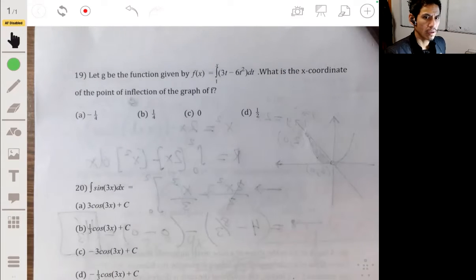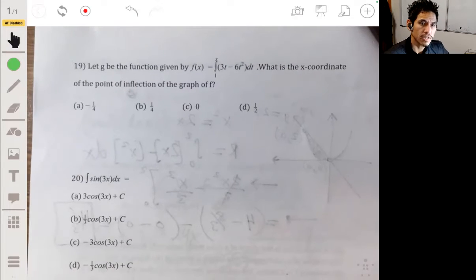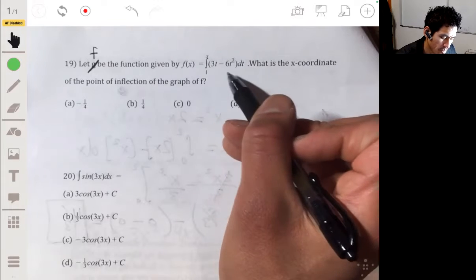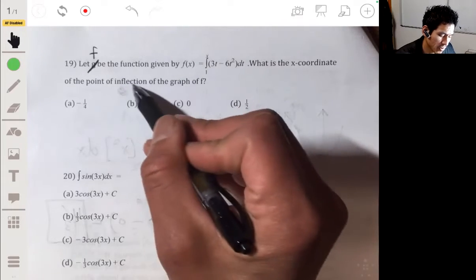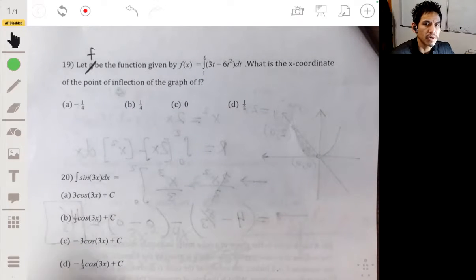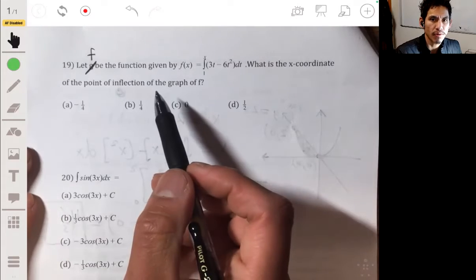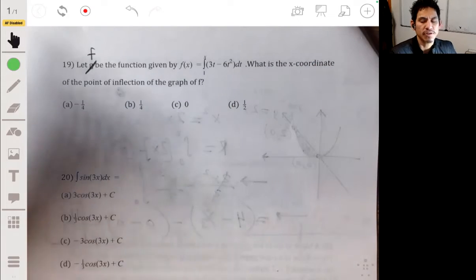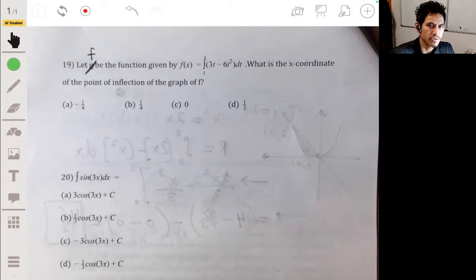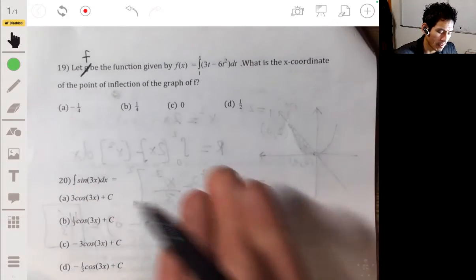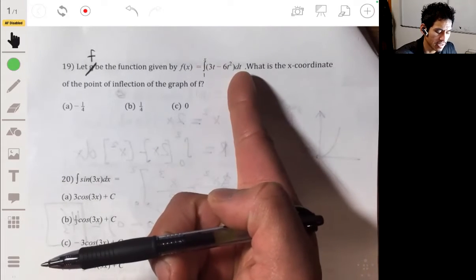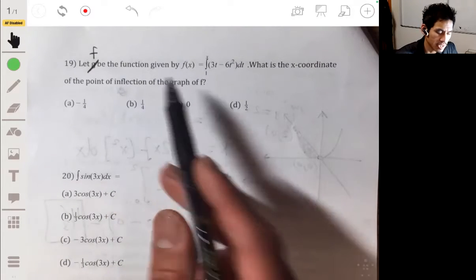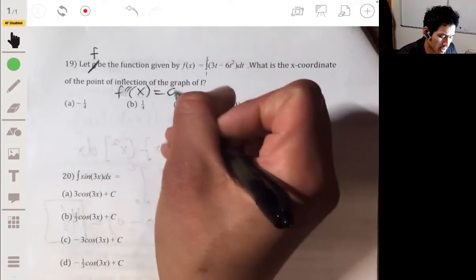Alright, number 19. Okay, so we got let g be the function given by... Okay, this was a typo. Let f be the function given by f(x) is equal to this integral. And we want to find the x coordinate of the point of inflection of the graph of f. So first, let's remember, when we're talking about an integral where you have one of the endpoints as a variable, the problem is either going to be requiring you to take the derivative. And when you take the derivative of the integral, it just basically becomes the inside. Or you're just going to plug the number straight up in. Now, when we're talking about inflection points, we want to find when the second derivative is equal to 0. That's how we can find the inflection point.